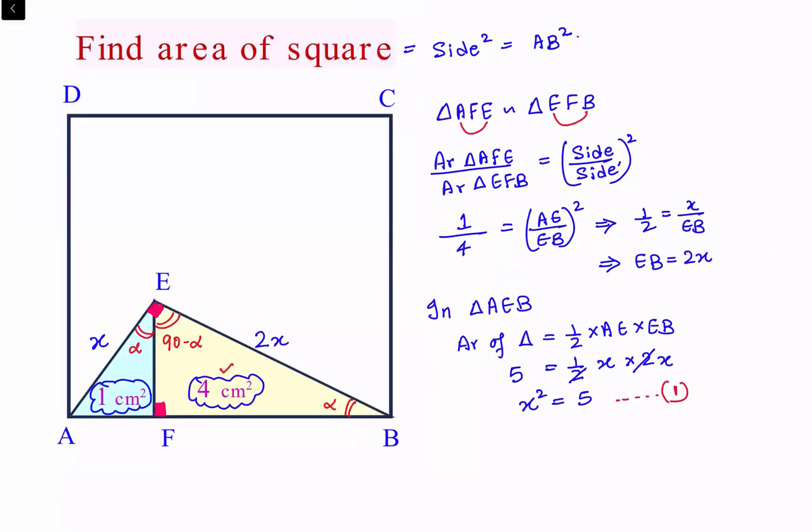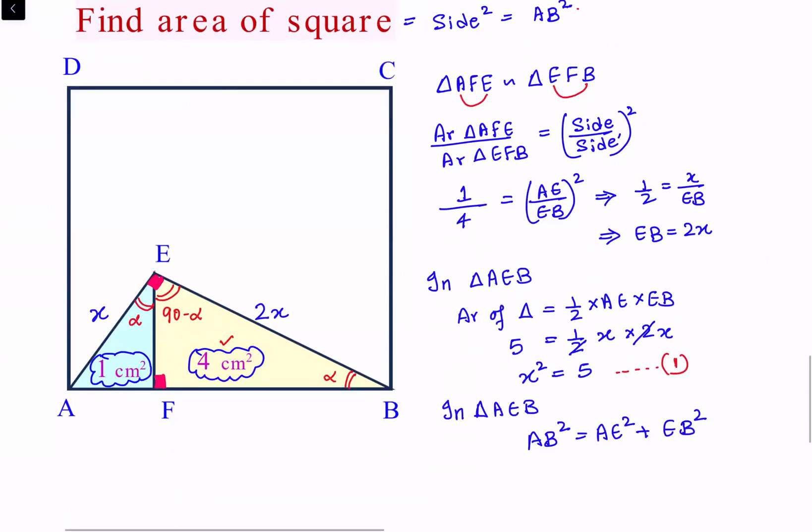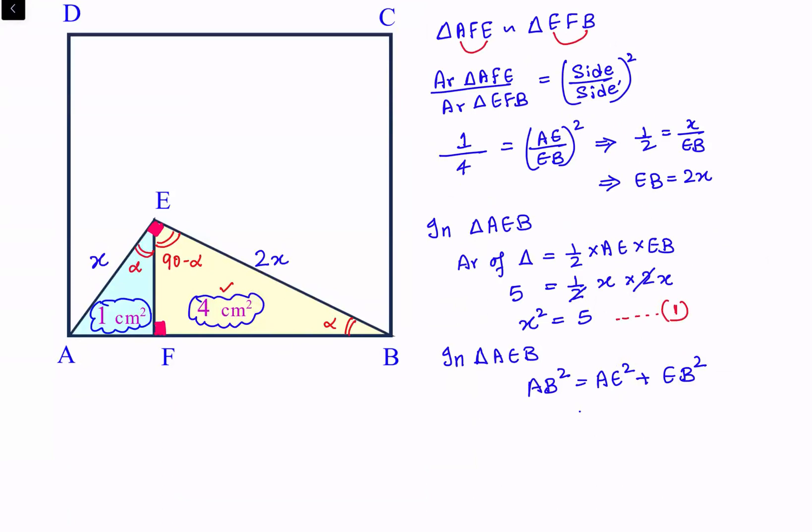Again in triangle AEB, we know that AB² equals AE² plus EB² by applying Pythagoras theorem. Solving we get AB² is X² plus EB is 2X, so (2X)² is 4X². This becomes 5X².